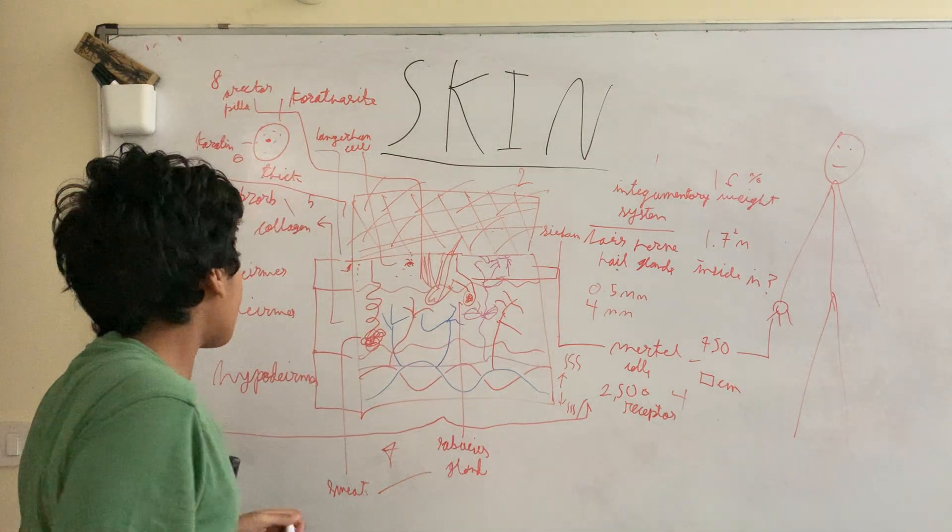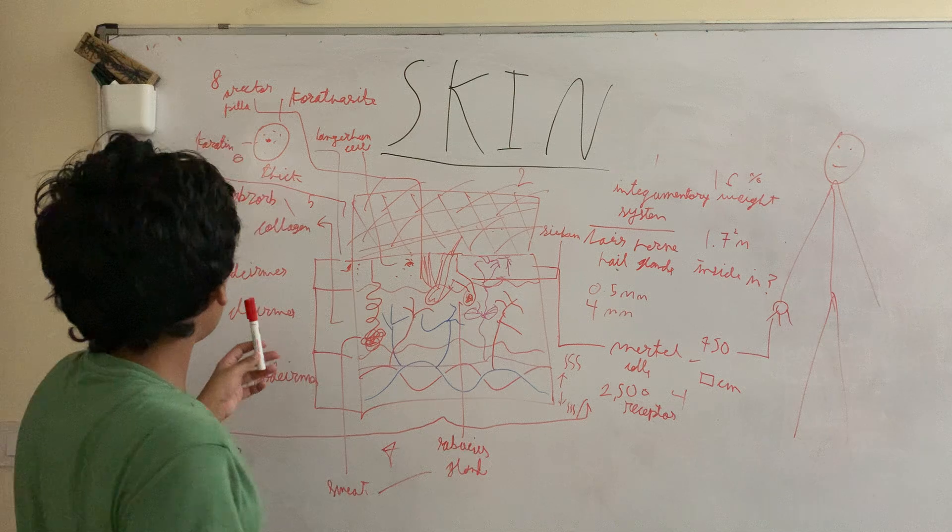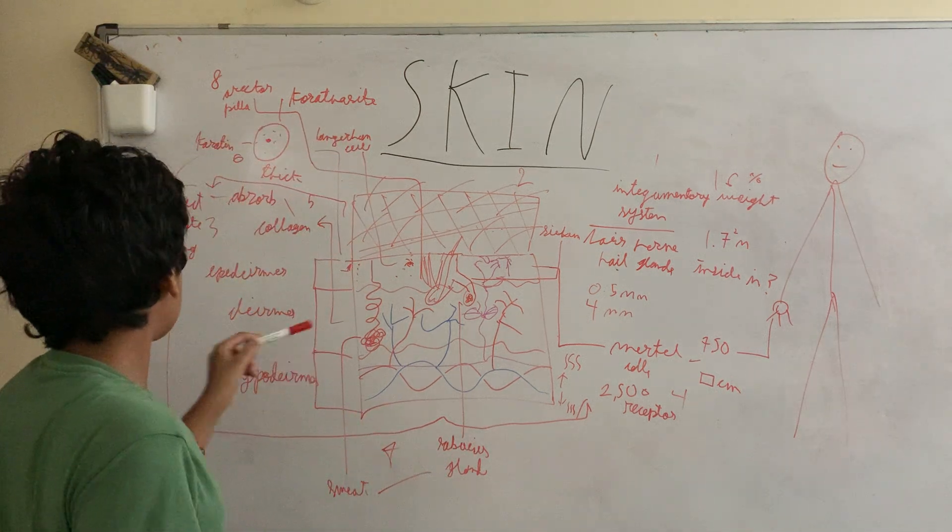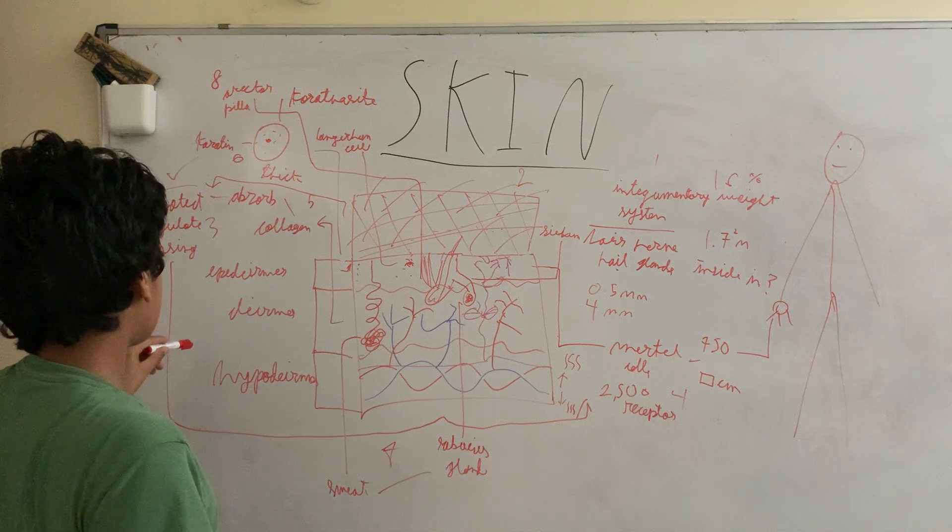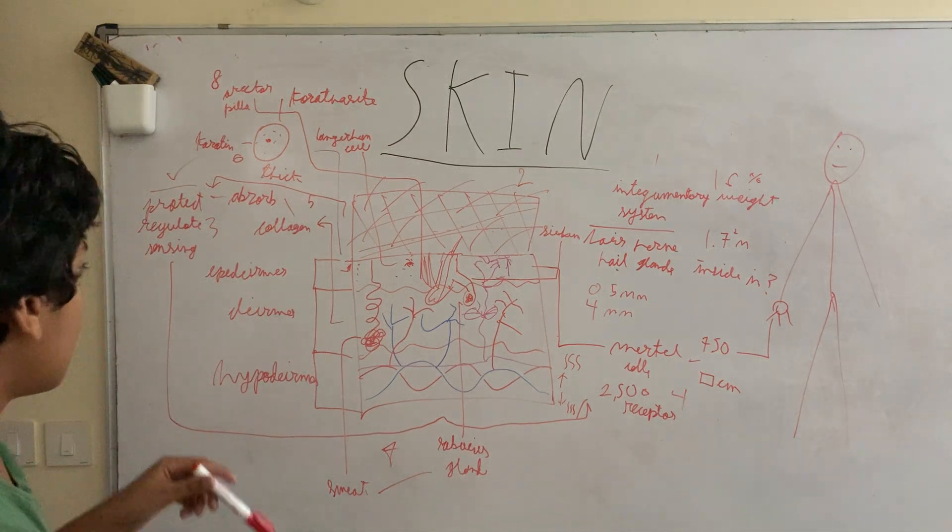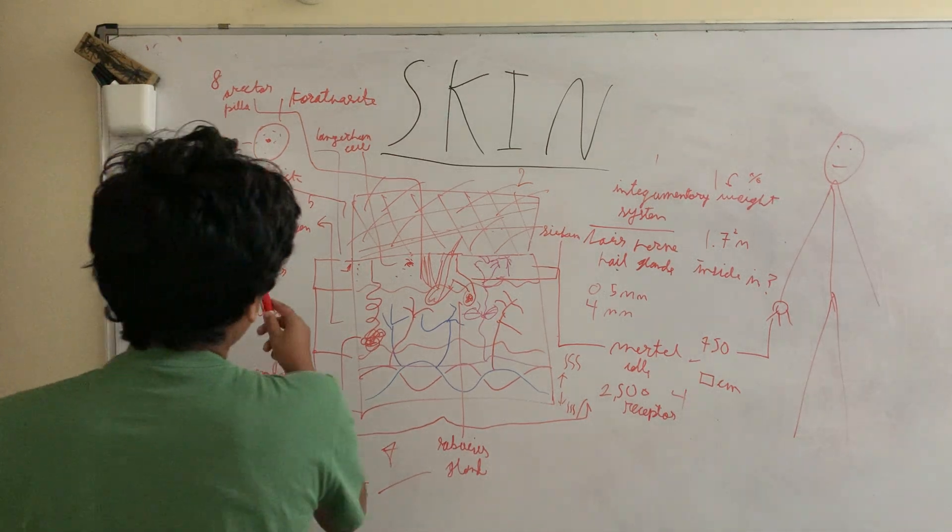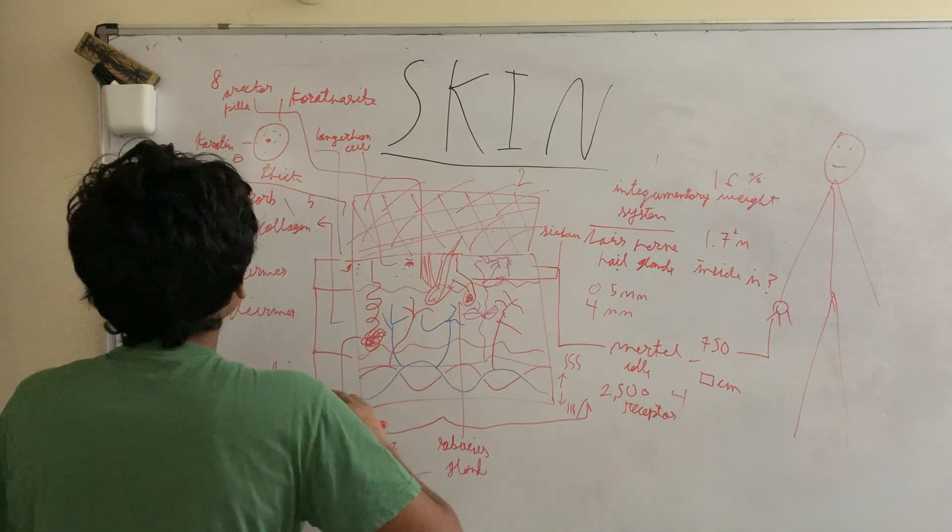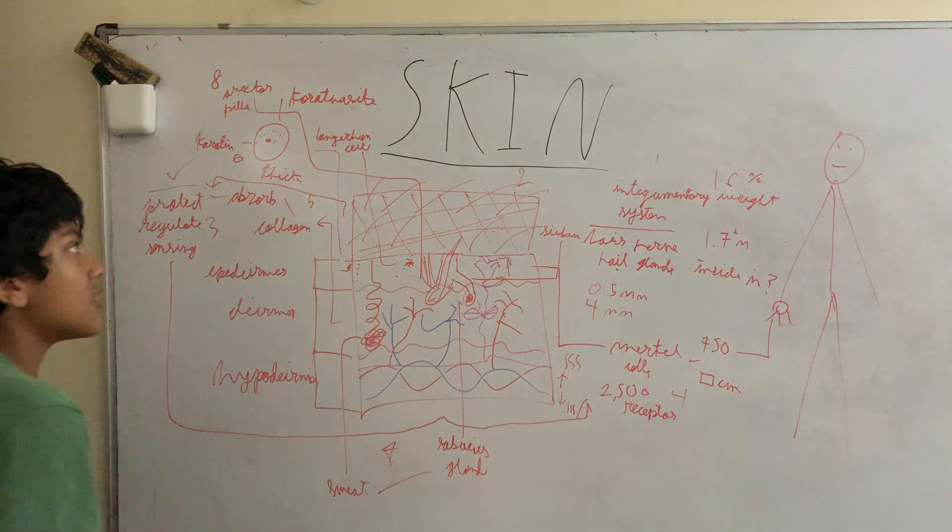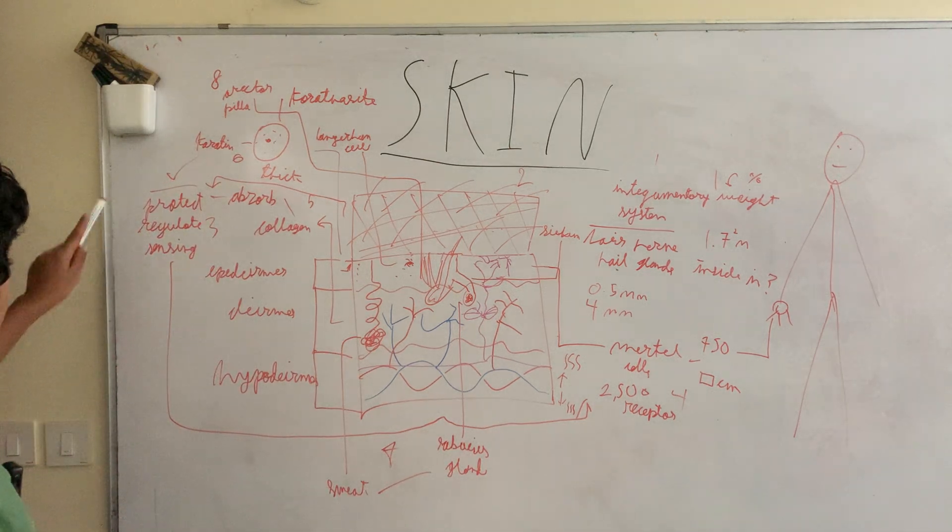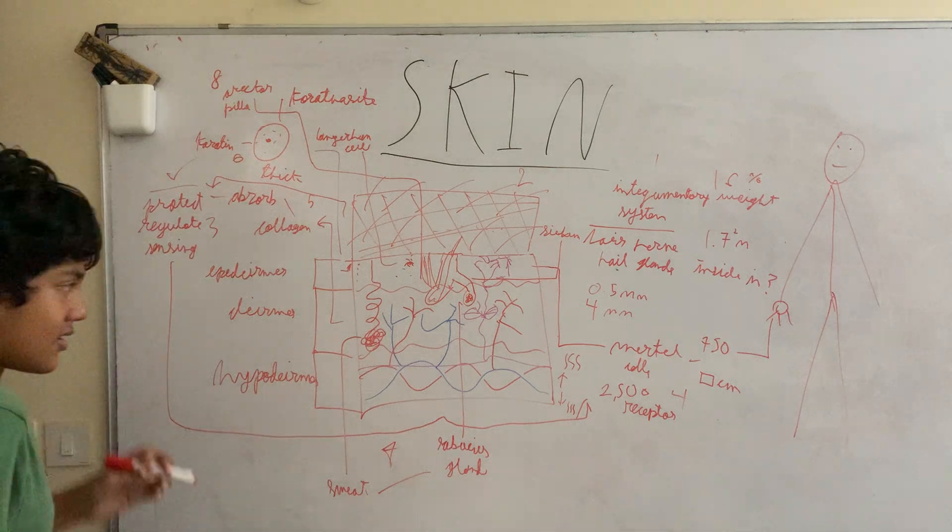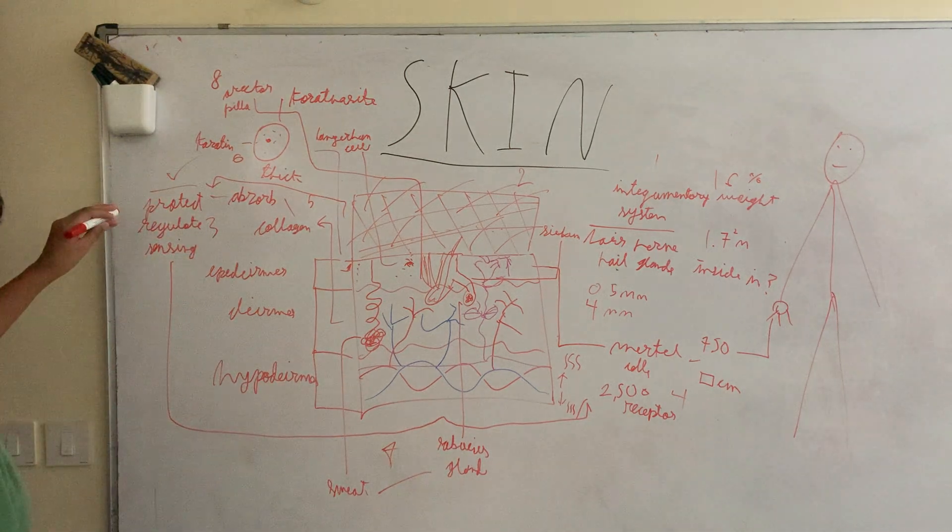The skin is mainly comprised of three parts: the epidermis, the dermis, and the hypodermis. These three parts make up the skin. The skin protects, helps us to sense, and helps us to regulate as well.